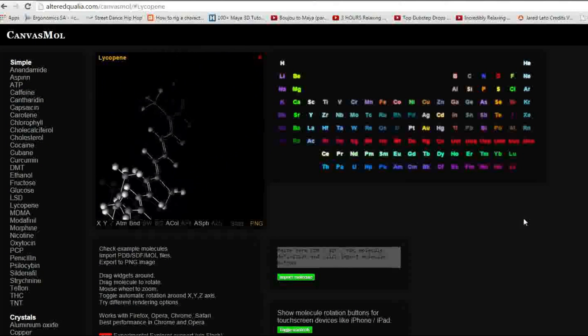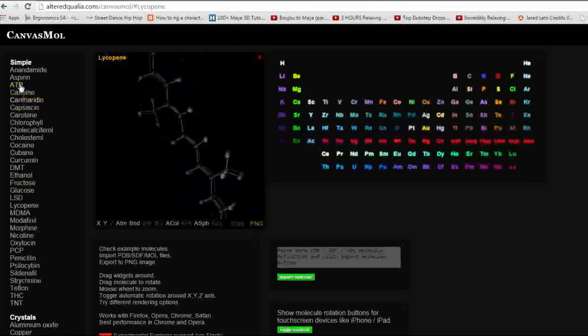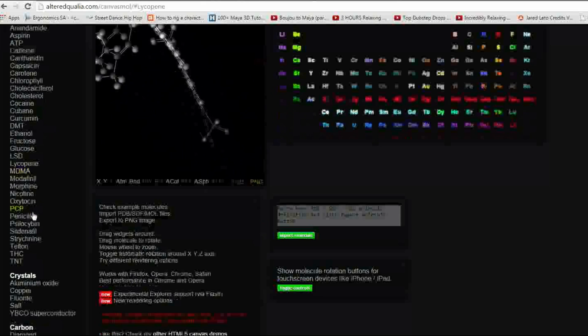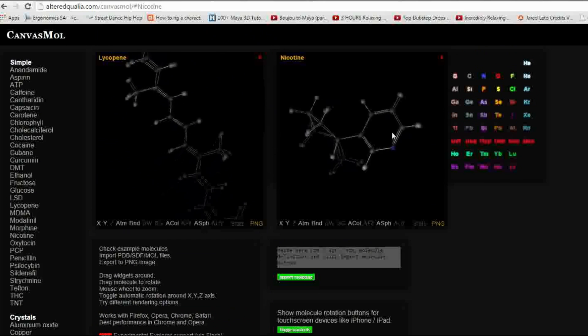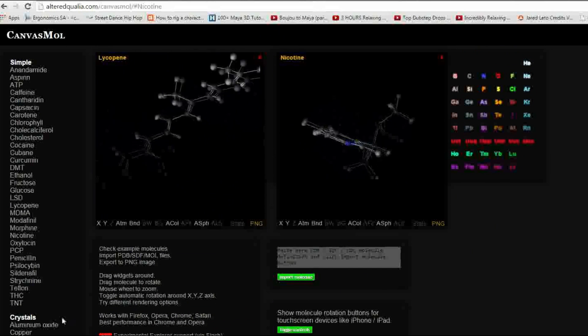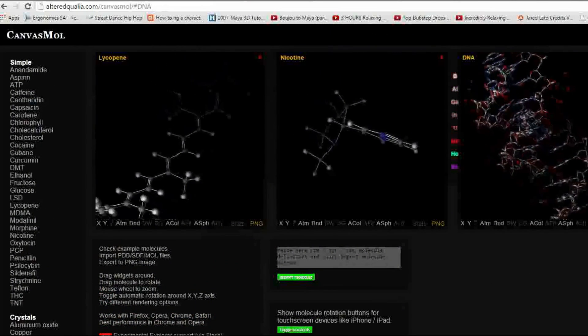So for those interested in the structure of organic molecules, I advise you to check out a program or an online program called CanvasMol. Here you can look at all kinds of different molecules from serotonin to dopamine, and you can look at what the carbon structure or the organic molecule structures look like. You can even look at very complex molecules like DNA and certain proteins and enzymes.